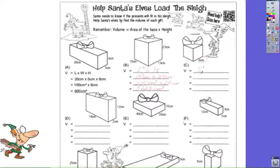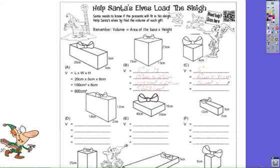The side is 6 centimeters. We could square that to find the area of the base, multiplied by 6 centimeters which is the height. 6 squared is 36 square centimeters, because we're measuring the area of the base. Multiplied by 6 centimeters, the height — 36 times 6 is 216 cubic centimeters, because we measure volume in cubes.